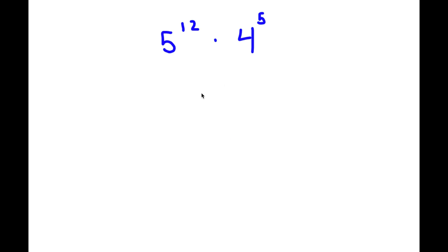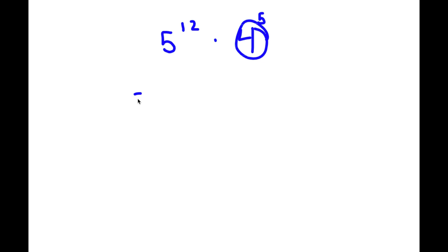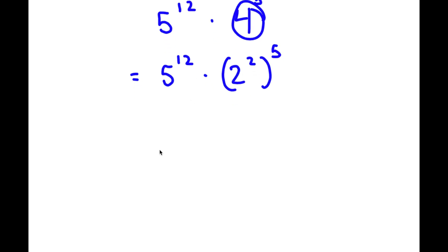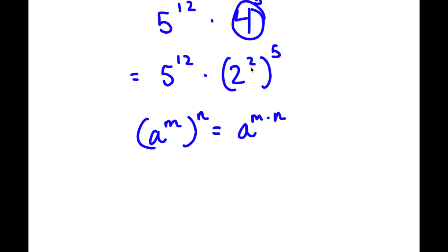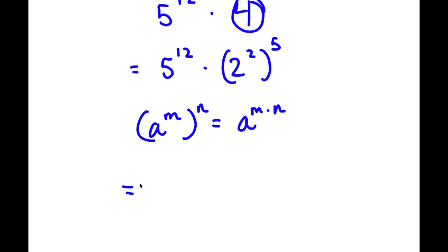So in this problem I have 5 to the power of 12 times 4 to the power of 5. To solve this, I'm going to first rewrite 4 as 2 to the power of 2. So now I have 5 to the power of 12 times 2 to the power of 2 to the power of 5. Using the rule a to the power of m to the power of n equals a to the power of m times n, that gives 2 to the power of 10.